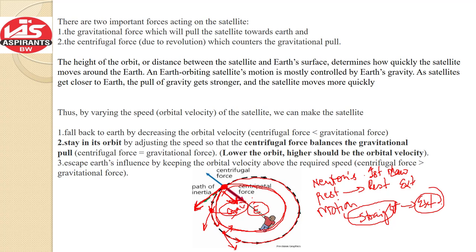There are two important forces acting on a satellite. The first is the gravitational force, which attracts or pulls the satellite towards the Earth. The second is the centrifugal force, which is due to the revolution and which counters the gravitational pull. So one force acts inward — that is the gravitational force — and the centrifugal force acts outward, giving the satellite a tendency to move tangentially away.